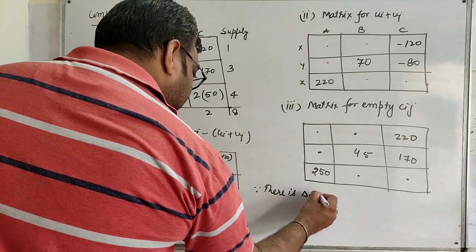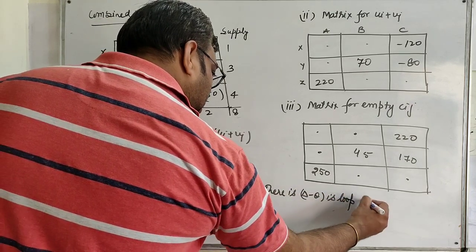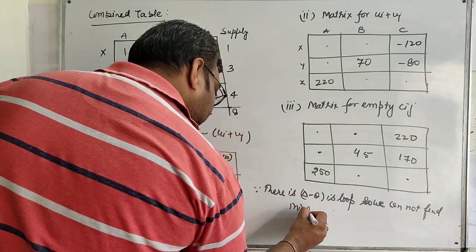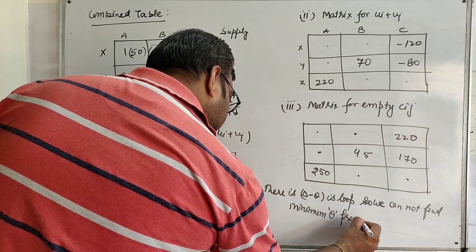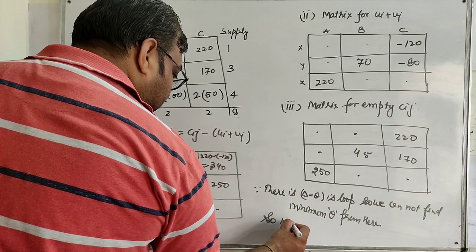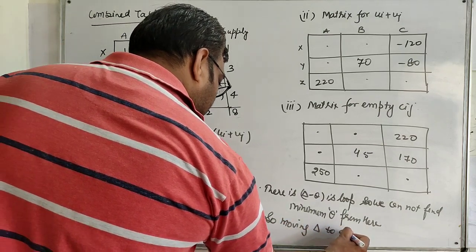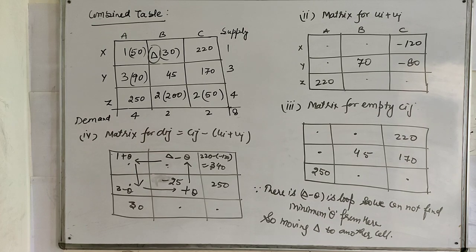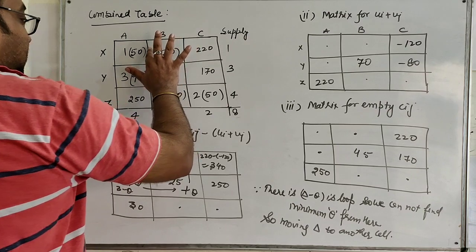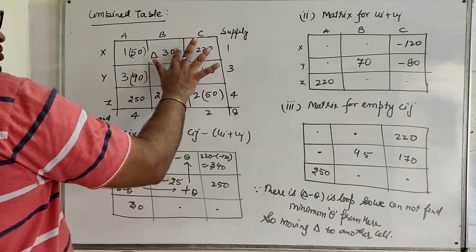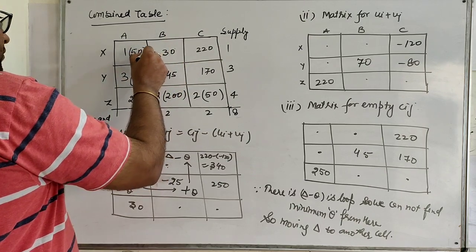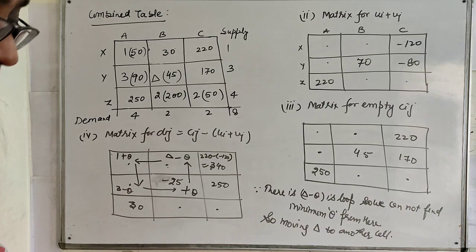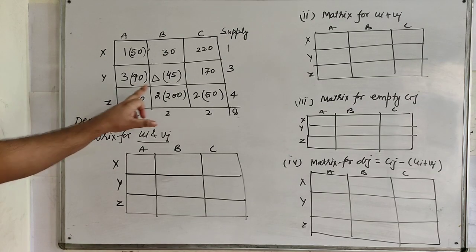Since there is delta minus theta in the loop, we cannot find the minimum theta from here. So we are moving delta to another cell. The current lowest empty cell was cost 30; the second lowest element among empty cells is 45. So we put delta at the cell with cost 45 and check the whole process again.